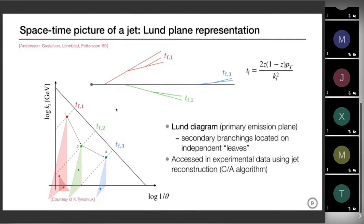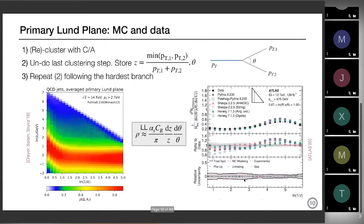This Lund diagram would be the way of looking at substructure because it contains everything — it's the substructure of the shower. Only recently has it been proposed to access it in experimental data. To measure it in real life you use jet reconstruction algorithms — in particular Cambridge/Aachen. You recluster your jet with Cambridge/Aachen to get an angular-ordered tree, and undo the last clustering step, ending up with two subjets each with momentum pt1, pt2 at a given angle theta.